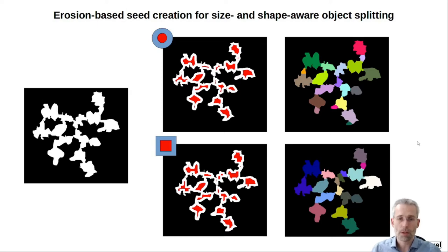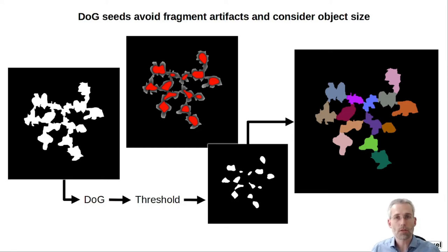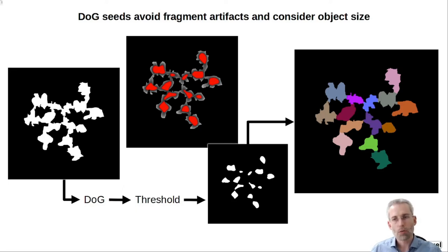Therefore one additional method was added: a Difference of Gaussians (DoG) based separation. A DoG filter is run on the extracted objects, which leads to more homogeneous or smoothly outlined seeds. Those seed regions are then thresholded and extracted, and from them the Voronoi diagram is filled to separate the objects. They do not have as much of a problem with breaking-off parts, but still consider the size of objects, and therefore are quite well suited for these kinds of irregular structures.